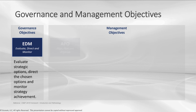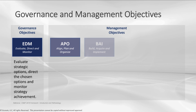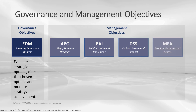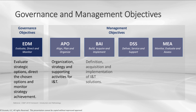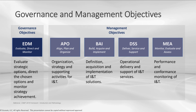On the management objectives side, we have four domains: APO — Align, Plan, and Organize; BAI — Build, Acquire, and Implement; DSS — Deliver, Service, and Support; and MEA — Monitor, Evaluate, and Assess. Under APO, this includes the organizational strategy and supporting activities needed for information and technology. Under BAI, we define, acquire, implement, or retire those solutions. Under DSS, we handle the operational delivery and day-to-day support of those services. And under MEA, we check the performance and conformance of information and technology.